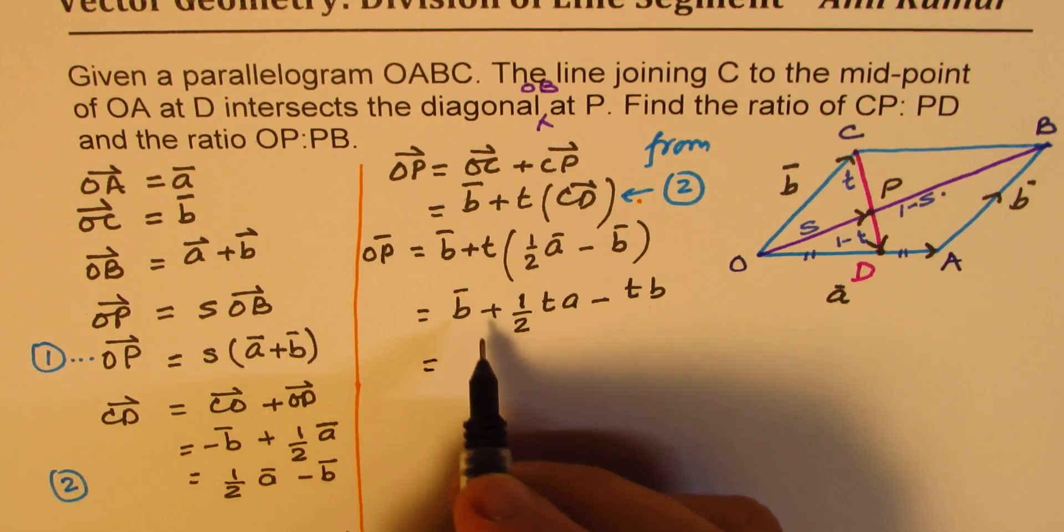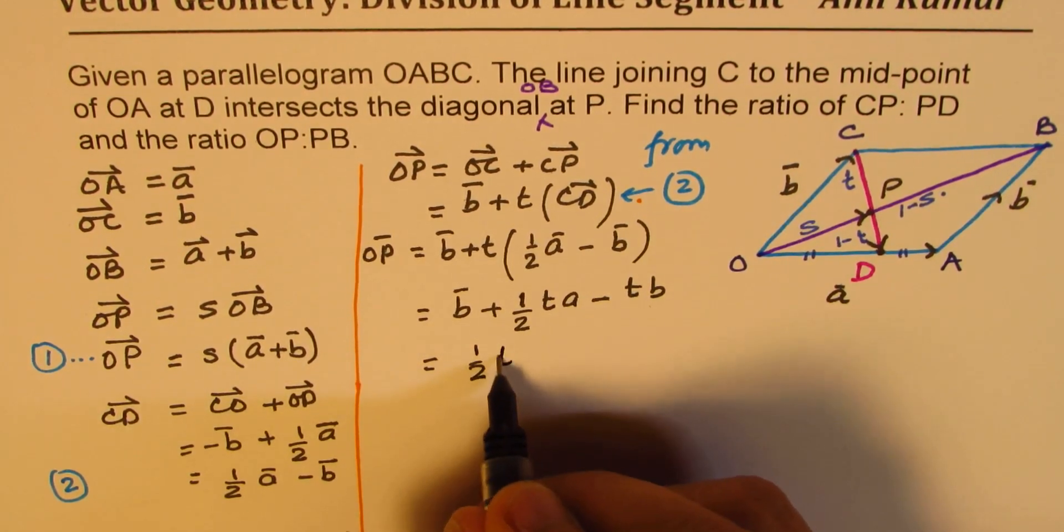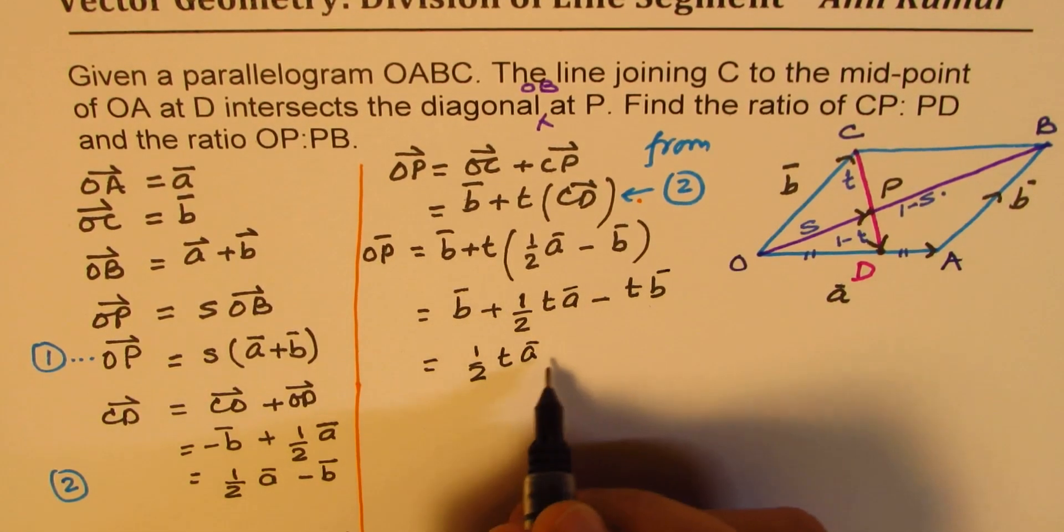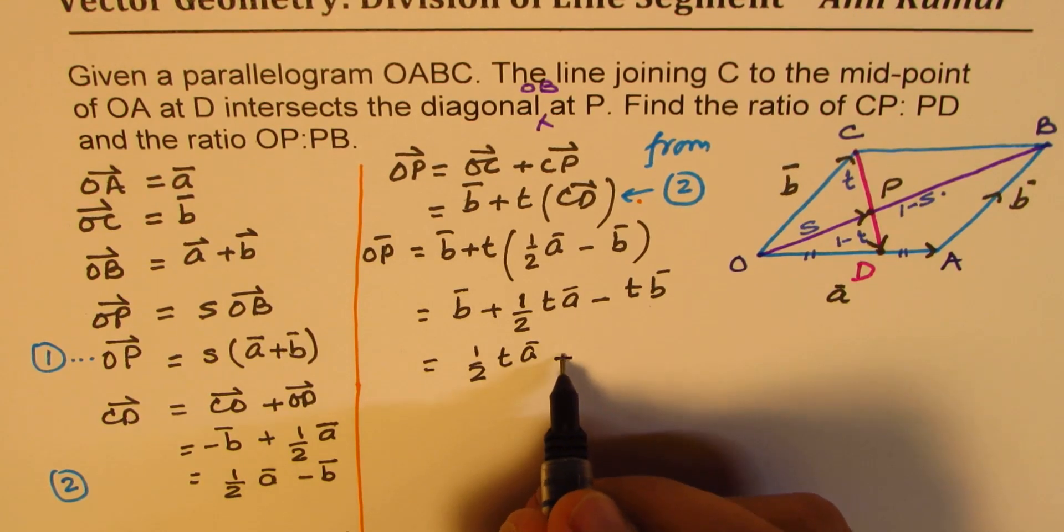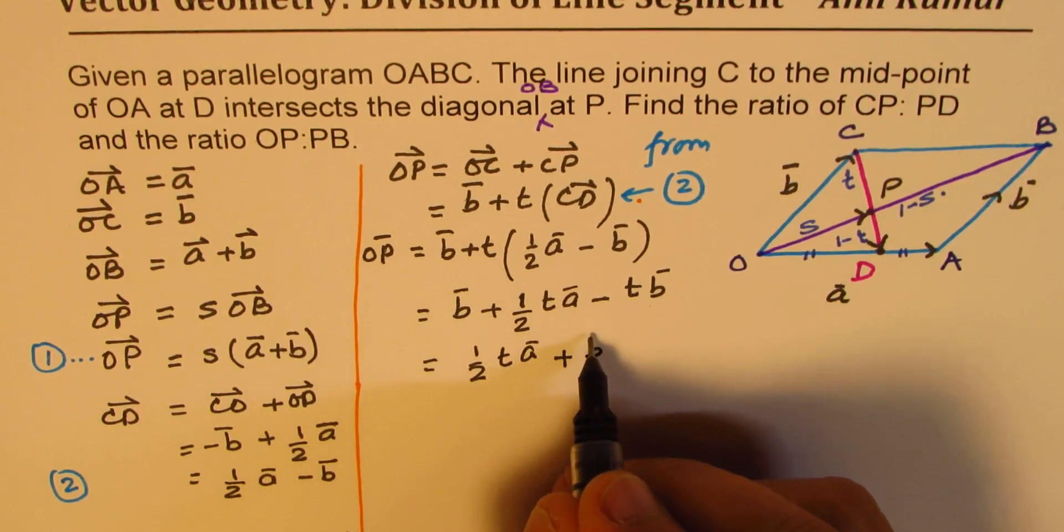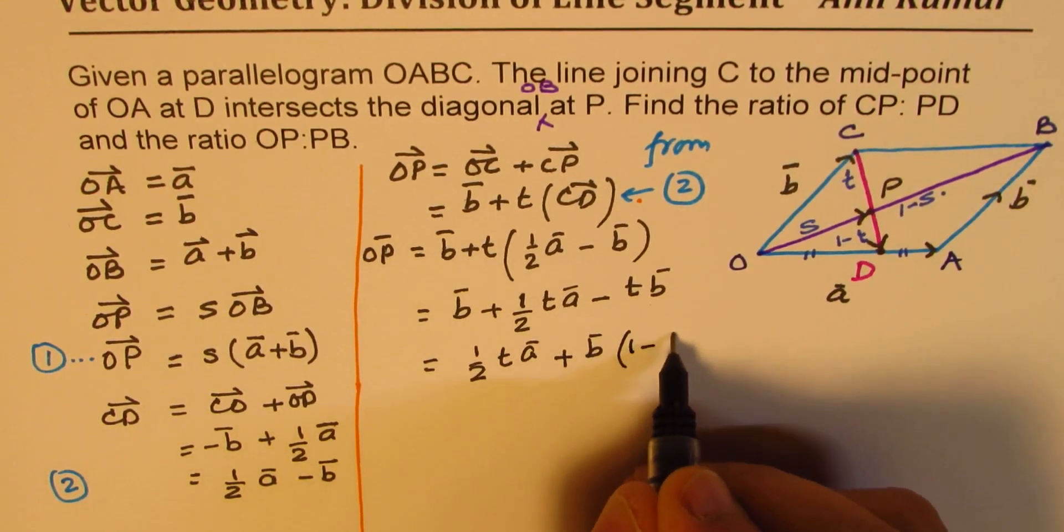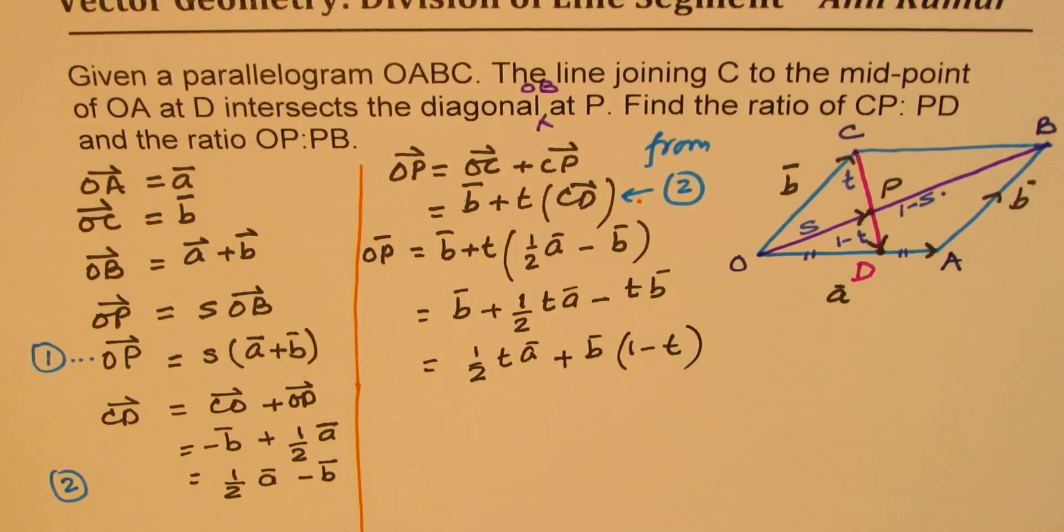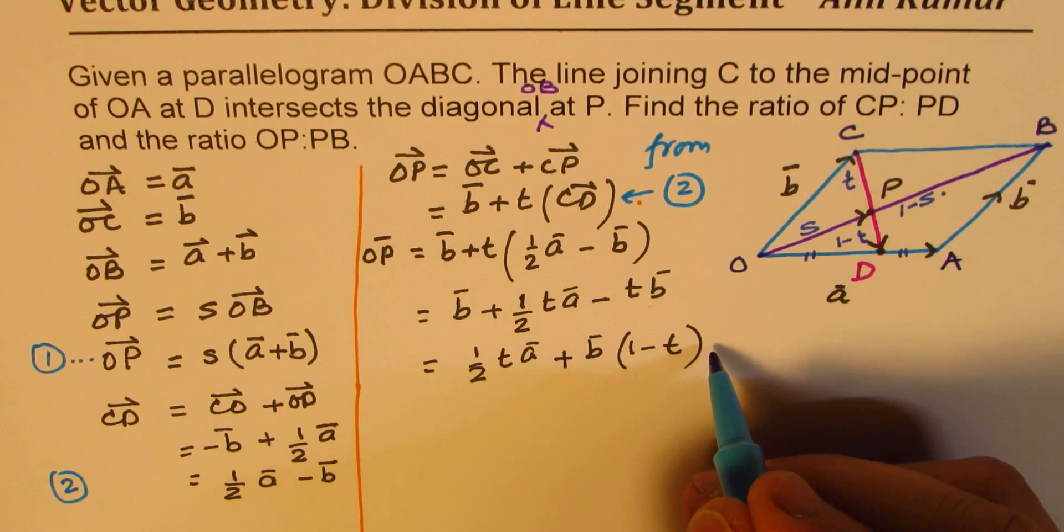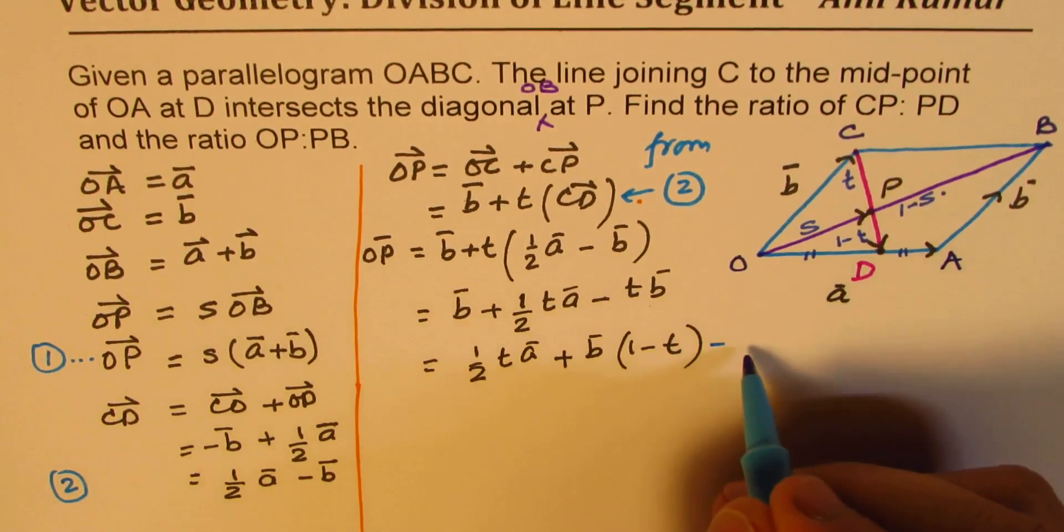So we have B plus half of T times A minus T times B. So writing this as half of T times A plus, we can take B common, we get 1 minus T here. So we get another equation for OP. Let's call this as our equation 3.